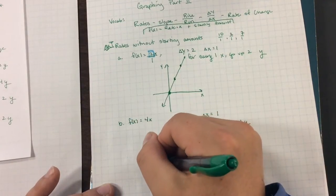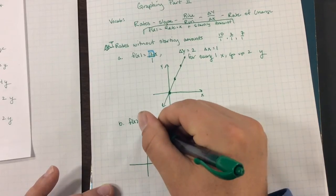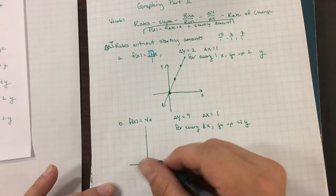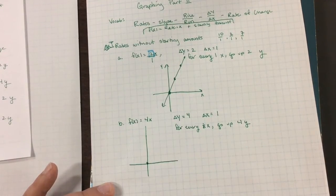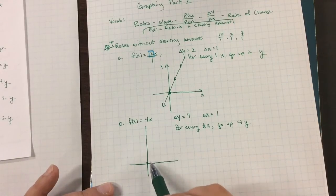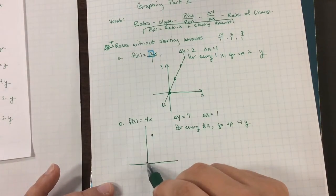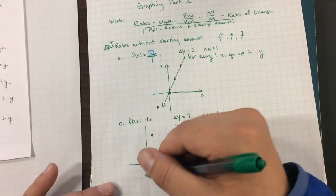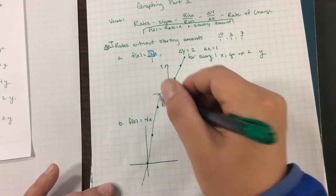So let's go graph this. There's no starting amount, so starting amount I'm going to be at 0. And according to my rate over here, for every 1 I go over, I'm going to go up 4. So I go over 1x, and I'm going to go up 4 on the y. Go over 1x, go up 4 on the y. And at this point, I can go ahead and graph this line.